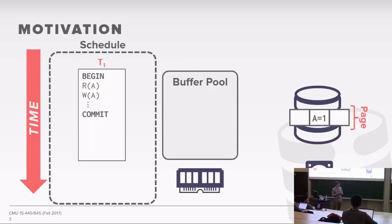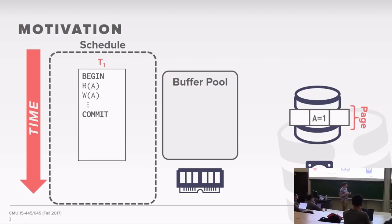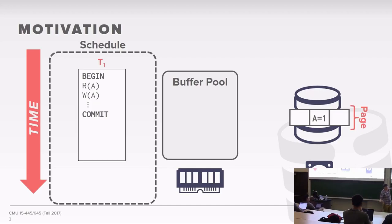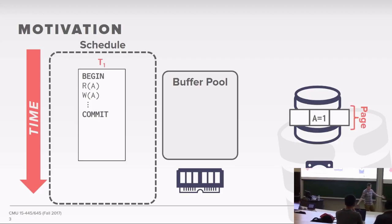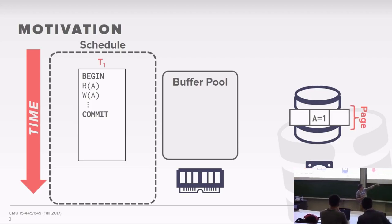To motivate what we're going to talk about today, let's look at a simple scenario. We have a transaction that makes changes in our database, and we want to see how we can make sure everything works. This is our schedule — where we execute the transactions, basically the operations. In memory we have our buffer pool, the same thing you implemented for the first project. And out on disk we have the disk manager, where we store the pages of our database.